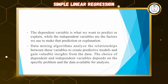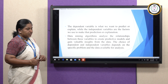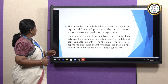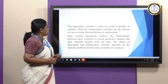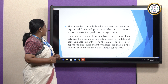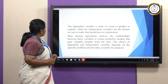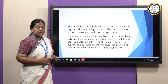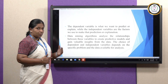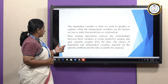In summary, the dependent variable is what we want to predict or explain, while the independent variables are the factors we use to make those predictions. Data mining algorithms analyze the relationship between these variables to create predictive models and gain valuable insights from the data. The choice of dependent and independent variables depends purely on the problem statement you are addressing.